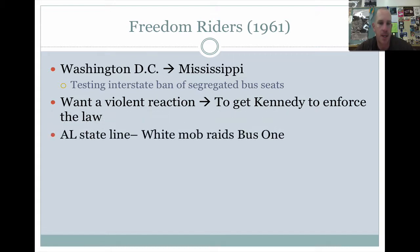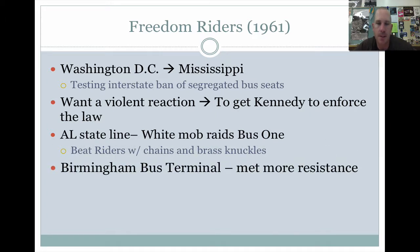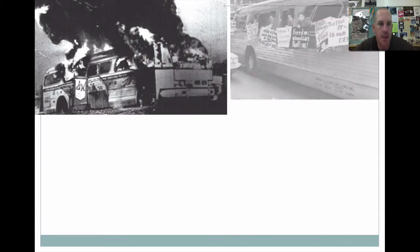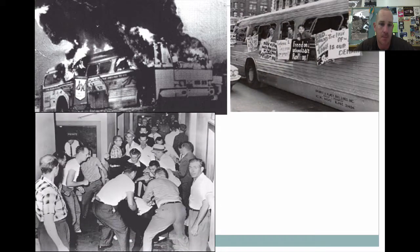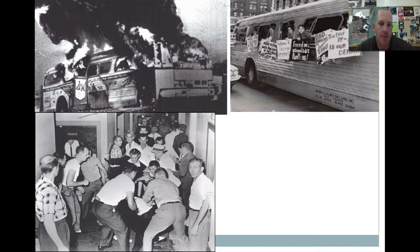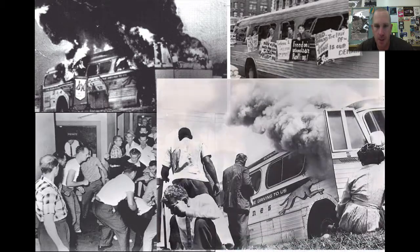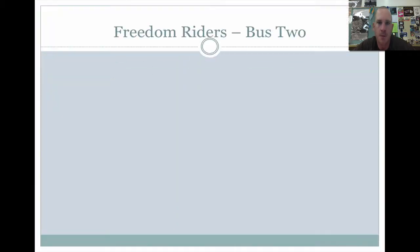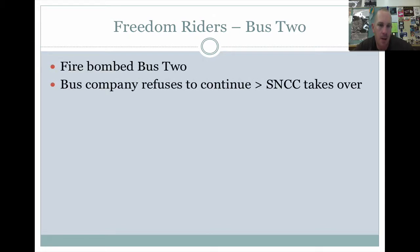At the Alabama state line, a white mob raided bus one, beating riders with chains and brass knuckles. At the Birmingham bus terminal, they met more resistance — these people sitting in the white waiting room, forcing the hand of white Southerners. This is where bus one's ride ends. Bus two was firebombed, as you can see in the picture. The bus company refused to continue. You can also see the beating outside the waiting room in another picture.